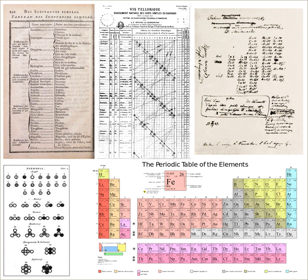Lavoisier's Traité Élémentaire de Chimie, written in 1789 and first translated into English by Robert Kerr, is considered to be the first modern textbook about chemistry. Lavoisier defined an element as a substance that cannot be broken down into a simpler substance by a chemical reaction. This simple definition served for a century and lasted until the discovery of subatomic particles.